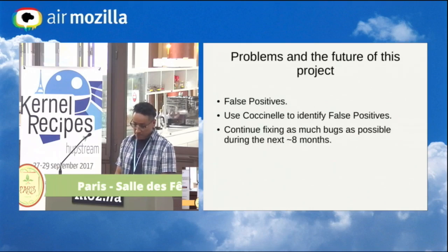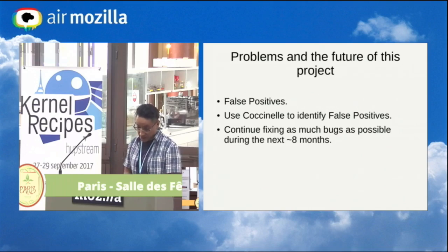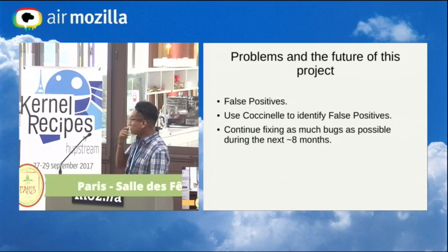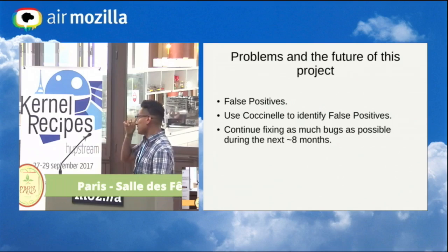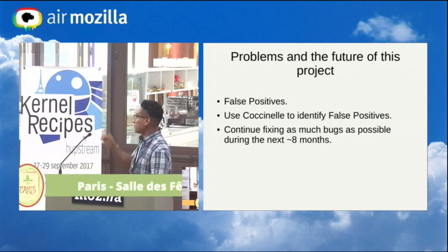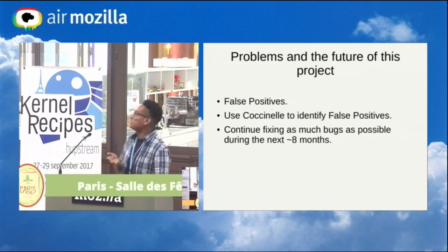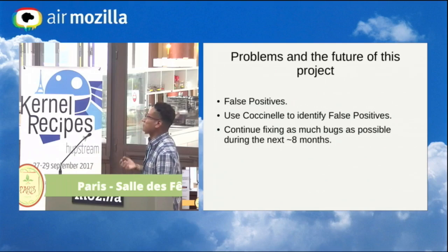The problems I've found so far is that Coverity reports a lot of false positives. My plan is to use CoxML to identify as many false positives as possible, and of course continue fixing as many issues and bugs as possible. Some of these issues have been applied to stable trees of the Linux kernel, so those have been actual bugs.